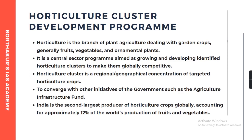Recent steps taken to uplift the horticulture sector include the allocation of rupees 2250 crore for 2021-22 for the Mission for Integrated Development of Horticulture, a centrally sponsored scheme for holistic growth covering fruits, vegetables, root and tuber crops, mushrooms, spices, flowers, and aromatic plants. There is tremendous scope for enhancing productivity to cater to an estimated demand of around 650 million tons of fruits and vegetables by 2050. New initiatives like focus on planting material production, cluster development program, and credit push through the Agri-infra fund are the right steps in this direction.